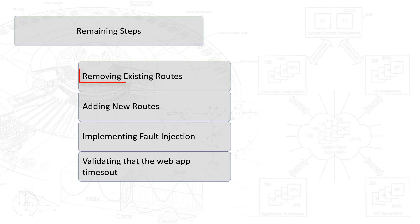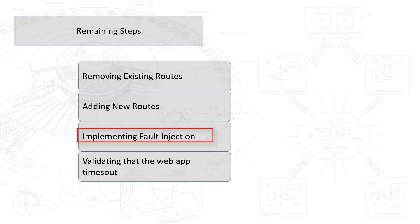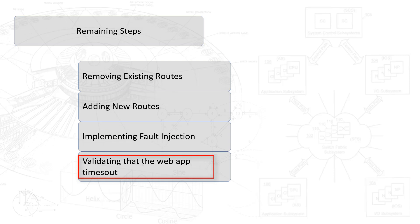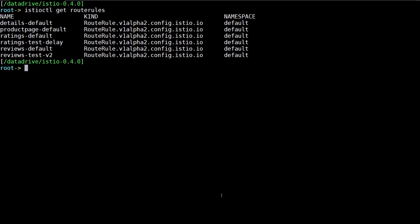The remaining steps are: first, remove any existing routes that might exist; then add in the new routes, which include the seven-second delay, thereby implementing fault injection; and then validate that the web app times out and the web page provides the appropriate error message as a result. Let's begin the actual hands-on portion.